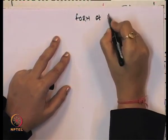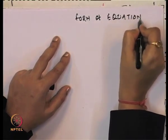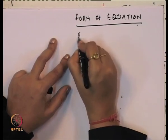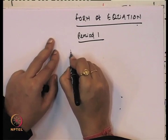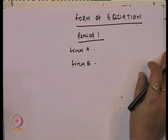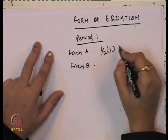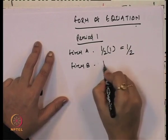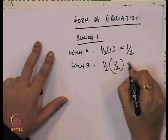We will see the detailed description of how this one third of total market output comes for each firm, taking it period by period. In period 1, firm A produces half of the total market and since the market is already split, A's share comes to one fourth.